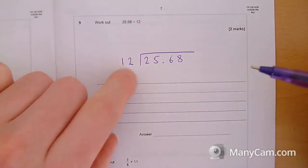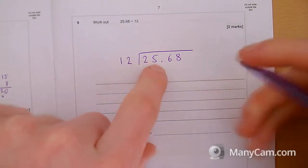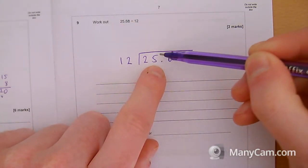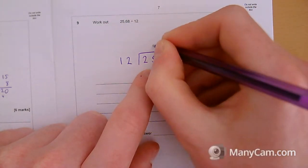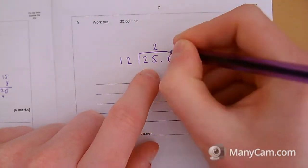We think how many 12s go into 2 - we can't do that, so we're going to move over. How many 12s go into 25? We get 2 because that would give us 24, so then we'd have 1 left over.